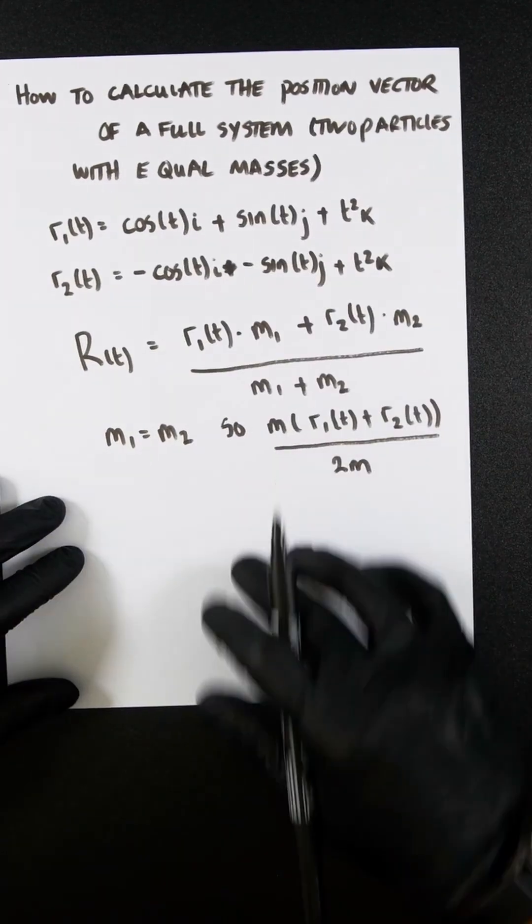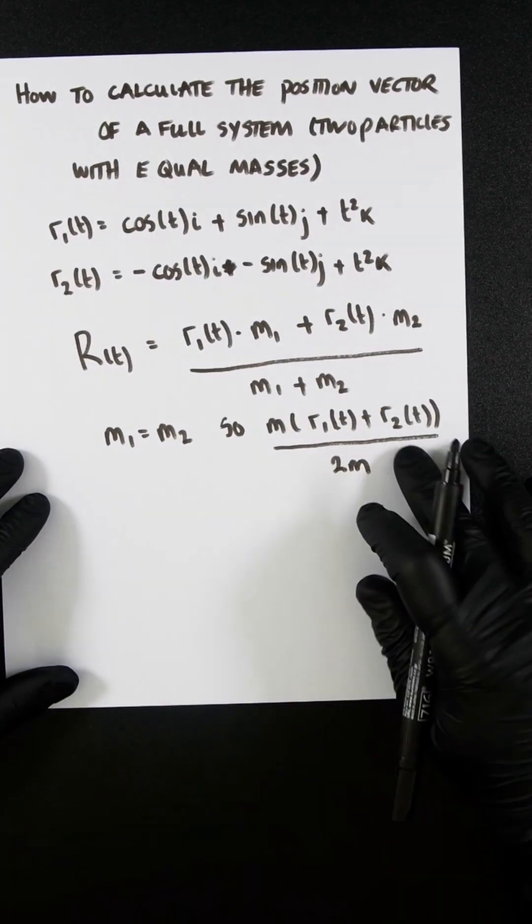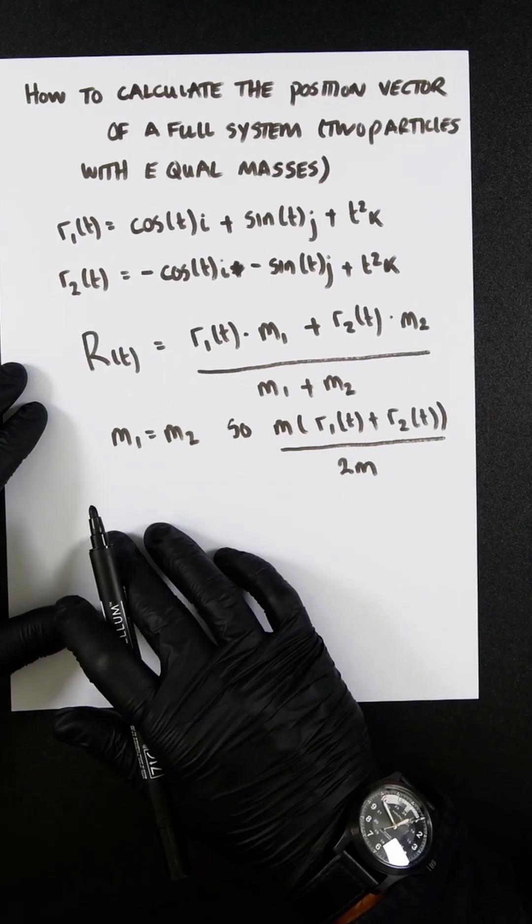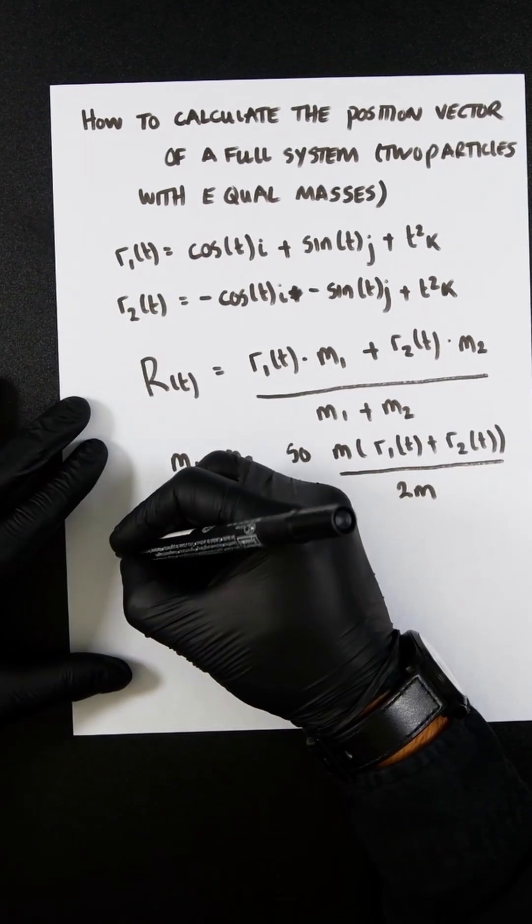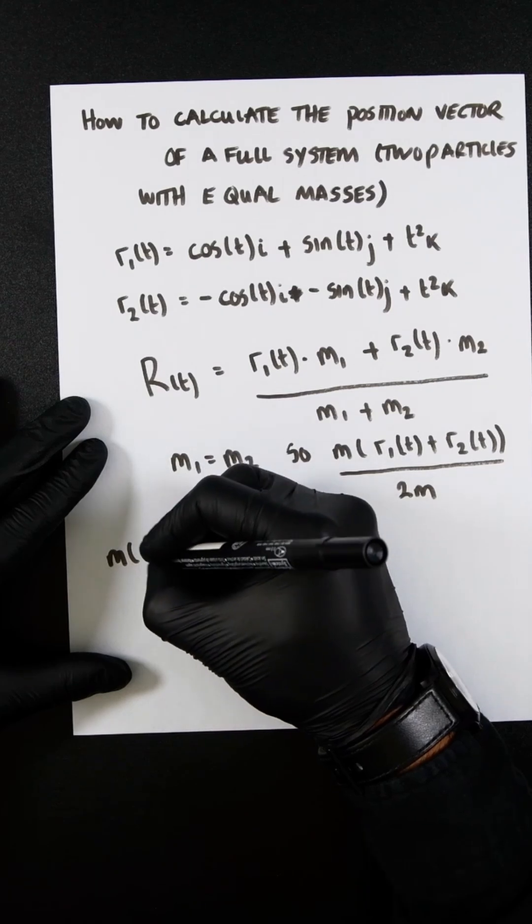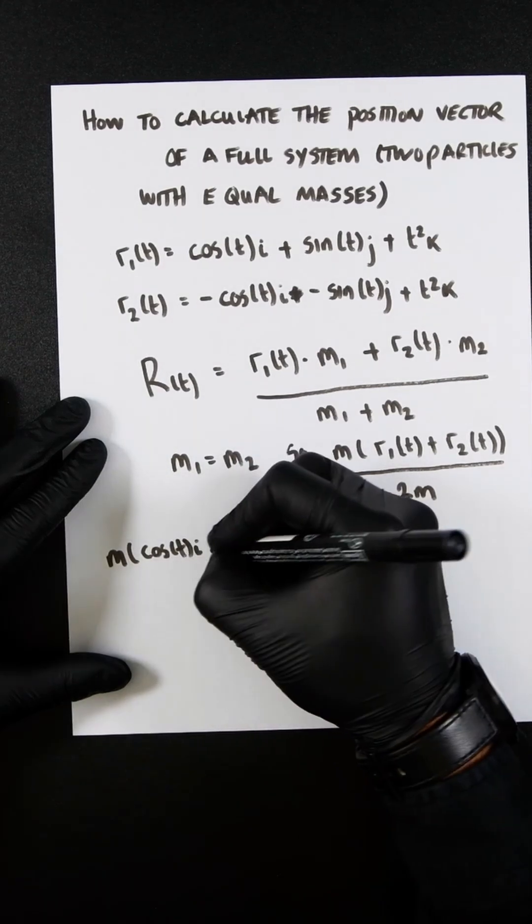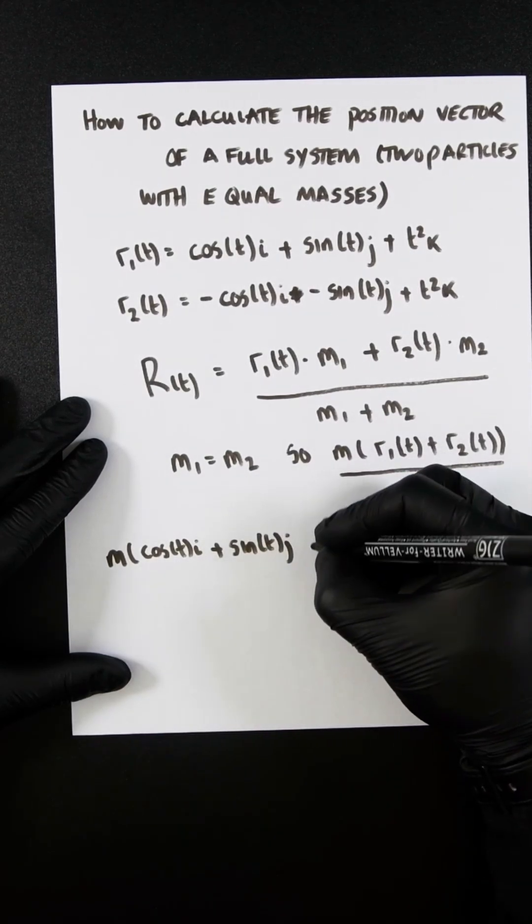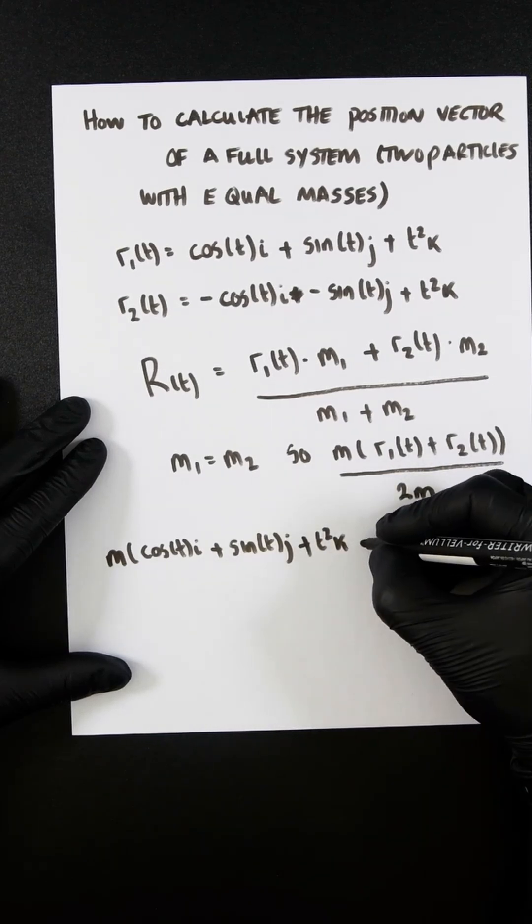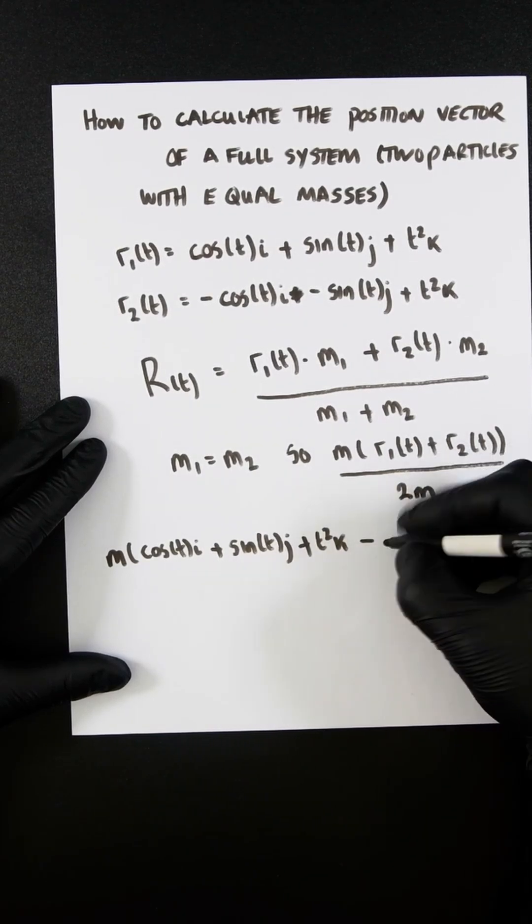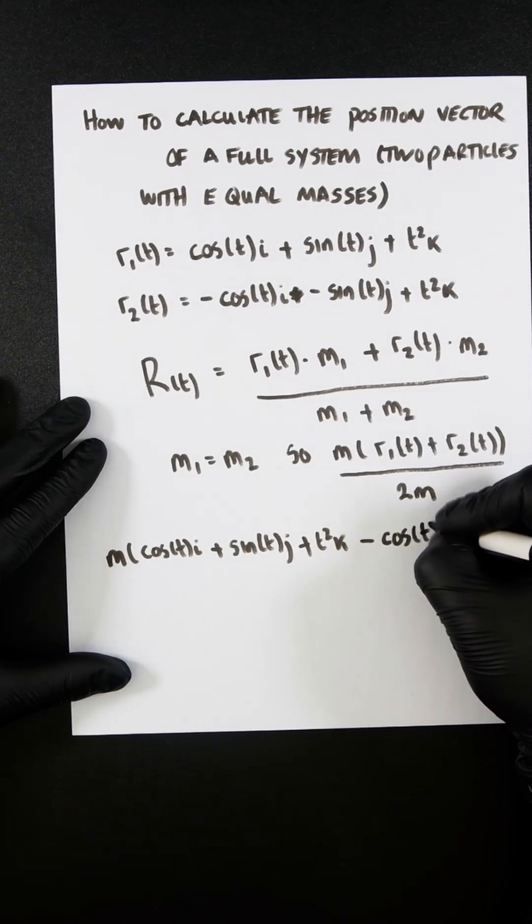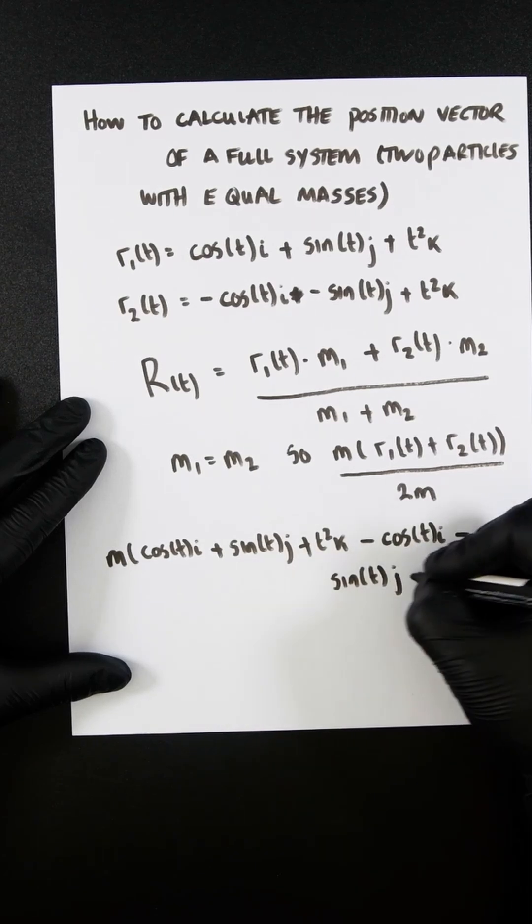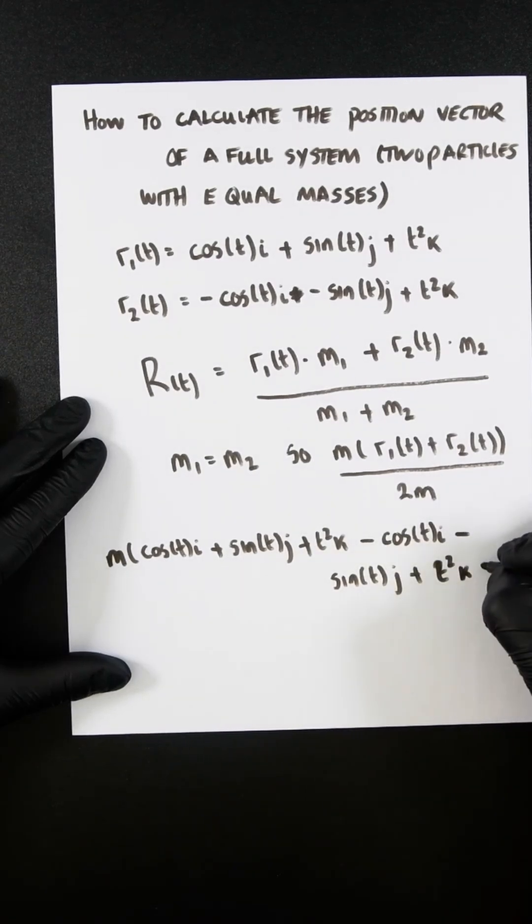Let's plug in both the position vectors given into this equation. That's the general equation you've got to use every single time. So m on the outside, I'm going to get cos(t)i plus sin(t)j plus t squared k, and then minus cos(t)i minus sin(t)j plus t squared k.